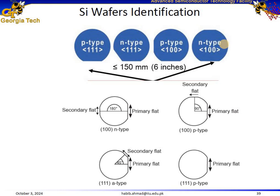Here I'm going to demonstrate how to identify silicon wafers based on their primary and secondary flats. This image explains the identification of silicon wafers, specifically distinguishing different types of wafers based on their crystallographic orientation — we can call them planes — and doping type. So basically from the primary and secondary flats, we can determine the growth planes and the doping type.